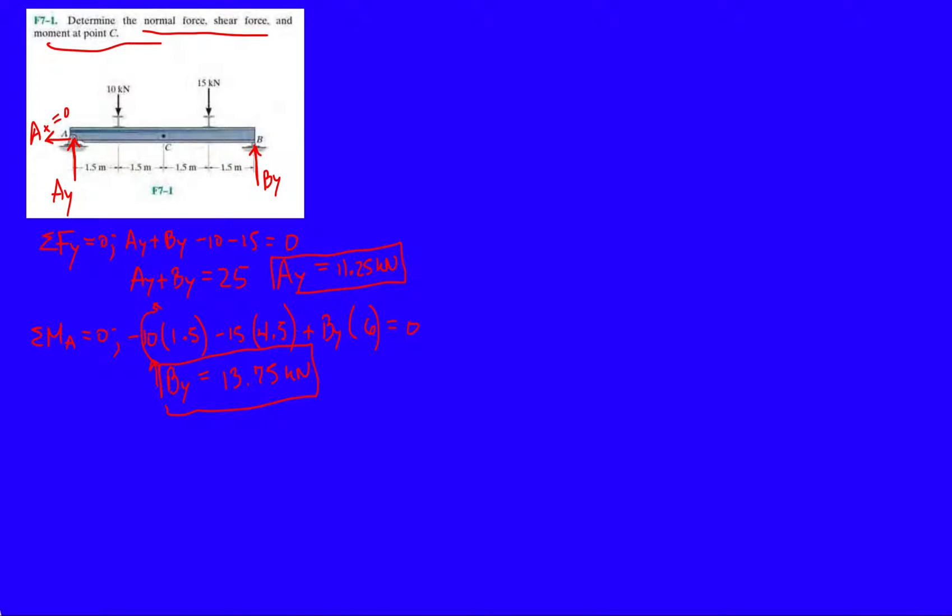Now we're going to do the method of sections from last chapter with some new added stuff. So they want the internal forces, internal reactions at C. So we're going to cut right through C. They're telling you exactly where to cut. And now you have a choice, analyze the left-hand side or the right-hand side. And if you watched my other videos on this chapter, I usually say, let's just go with the left-hand side.